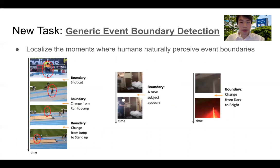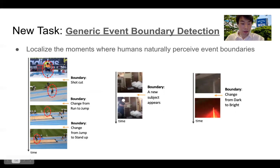That's why we put forward this new task called generic event boundary detection. Generic event boundaries could happen in many cases. For example, in the first video, which is a long drawn video, when the person is running there is a video editing effect — basically a jump cut — and we consider this an event boundary. When the person changes from running to jumping, there is another event boundary. When the person changes from jumping to standing, there is another boundary. These last two boundaries are more about change of action.